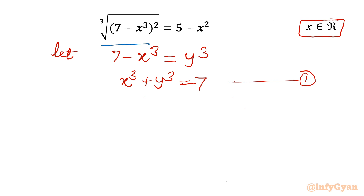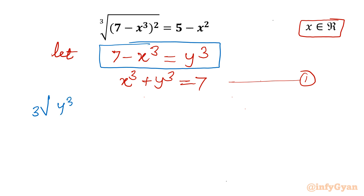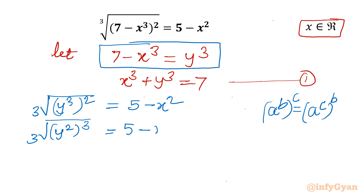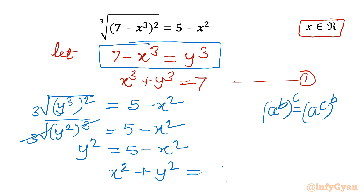Now if I apply 7 minus x cubed equal to y cubed, then the original equation will become: cube root of y cubed whole squared equal to 5 minus x squared. Using the exponent property (a^b)^c = (a^c)^b, I write this as cube root of y squared, whole cubed, equal to 5 minus x squared. The cube root and cube cancel, giving y squared equal to 5 minus x squared, or x squared plus y squared equal to 5. This I will call equation number 2.